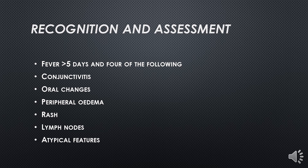The conjunctivitis in Kawasaki disease includes both palpebral and bulbar conjunctivitis. Bulbar conjunctivitis appears as redness of the white part of the eye. This is a bilateral feature of Kawasaki disease.